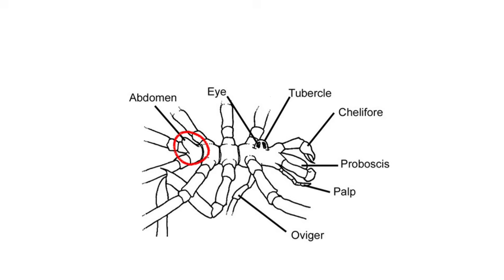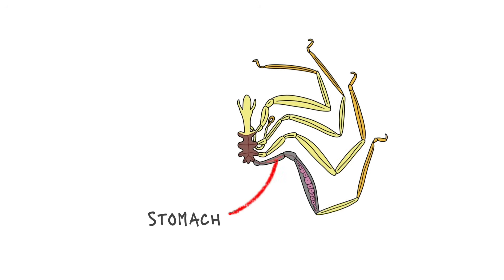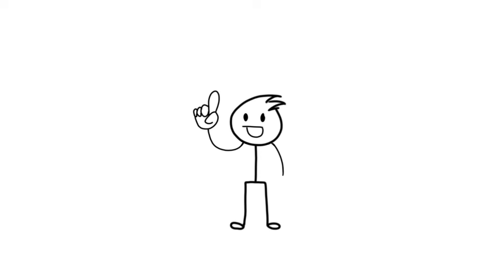They have such a tiny abdomen that they don't have space for organs. So, they keep their organs inside their legs. Yup, their stomach, intestines, and even their reproductive organs are stuffed inside their legs. Just imagine, a guy broke his hand, and the doctor said, Sorry, but you can no longer be a father. That would really suck.